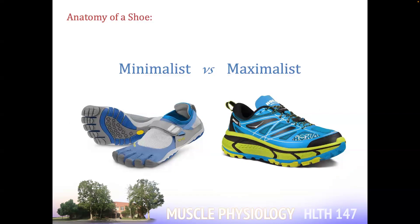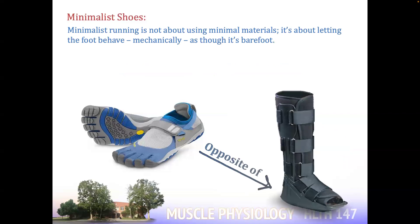A maximalist shoe grips your ankle at the heel and you're basically walking on a cloud. The bulk of the shoe industry, though, is fashion — it's jewelry. But our choice in that jewelry affects our musculoskeletal anatomy. The most important difference is that minimalist shoes recreate a natural gait as though you were wearing no shoes. The way we walk barefoot is different from how we walk in shoes, which is different from how we would walk in a cast. Our gait changes in each of these settings, and the muscles that contract are different.